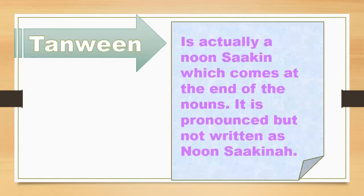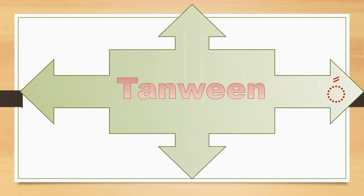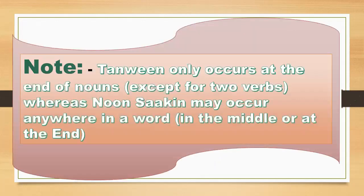Tanwin is a Noon Sakin which comes at the end of a noun — it is pronounced but not written. Tanwin requires a fathatayn, dammatayn, or kasratayn. Tanwin only occurs at the end of nouns, except for two special words. Noon Sakin may appear anywhere — in the middle or at the end of a word.